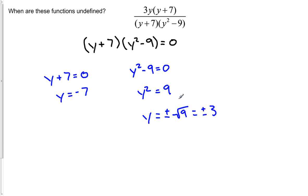So now we have three solutions that are all going to be a problem. y equals negative 7, y equals positive 3, y equals negative 3. If you plug any of these into the original equation, you'll find that it causes the entire denominator to go to zero. So let's go ahead and write out, when is the function undefined? When y equals negative 7, negative 3, or 3. These are the three cases when it is undefined.